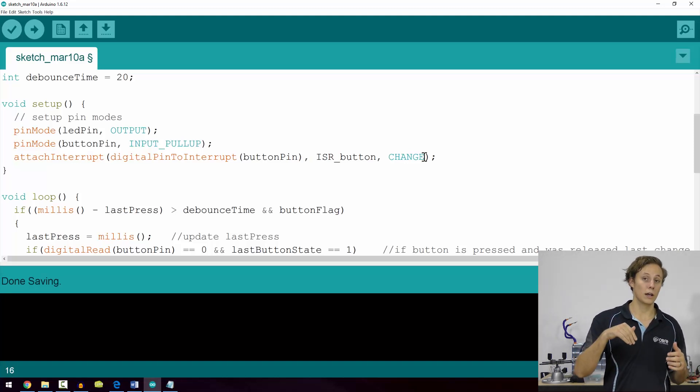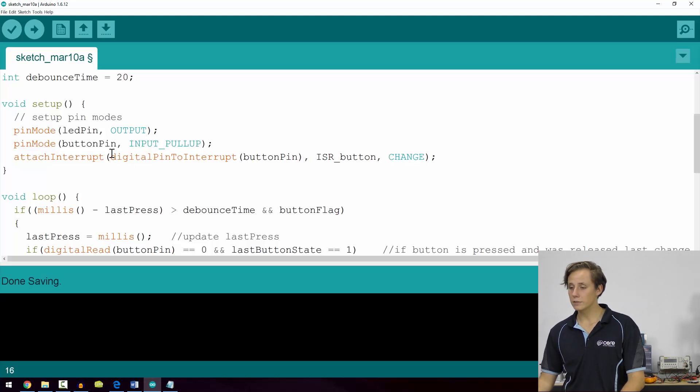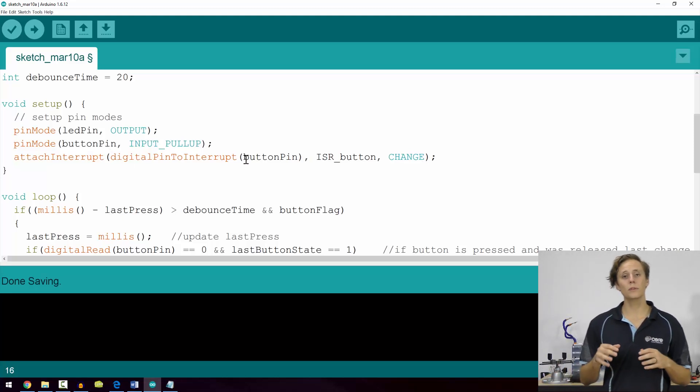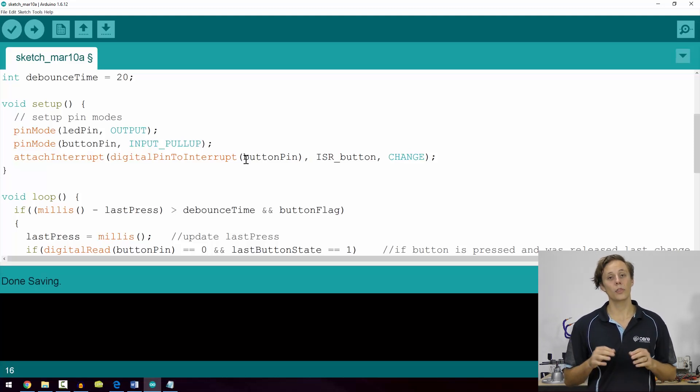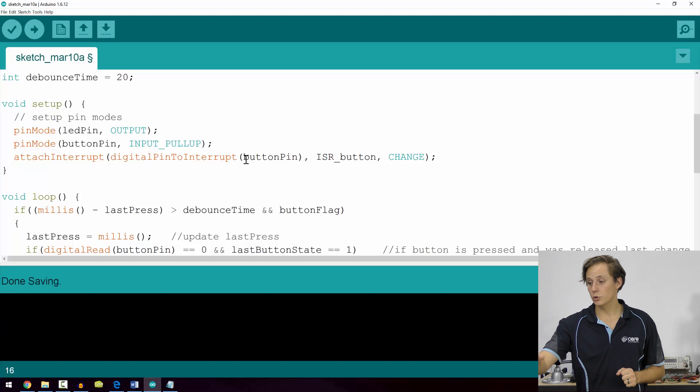You don't always have to use digital pin to interrupt; there's a couple of different syntax formats for doing this inside Arduino. However, digital pin to interrupt is the safest. It largely just depends on the model of Arduino board that you're using, but generally speaking, if you use digital pin to interrupt rather than just the pin itself, most boards are going to work without a hitch.